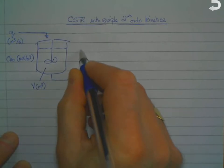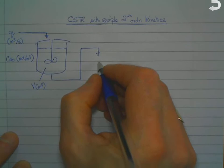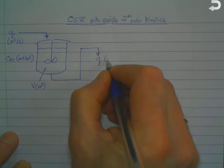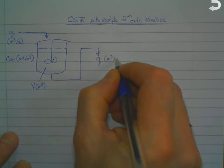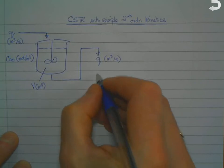Then we've got an outlet flow to maintain a constant volume in the reactor, and we assumed earlier that it would have the same volumetric flow rate Q meters cubed per second.